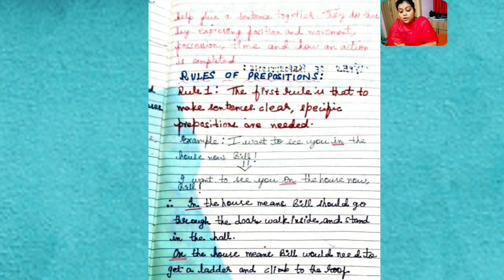On the house—when I say I want to see you on the house, Bill, Miss Bill would need to get a ladder and climb to the roof where he would be on top of the house. Previously, I told you about rule number one.